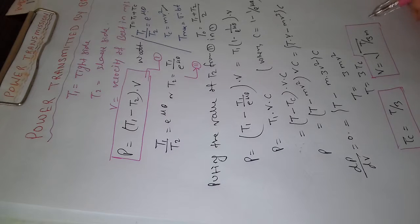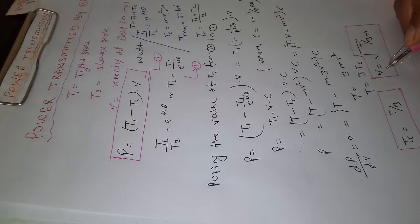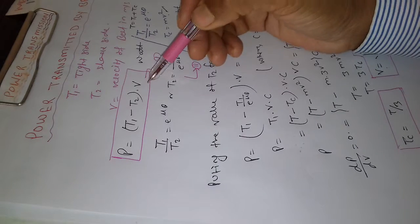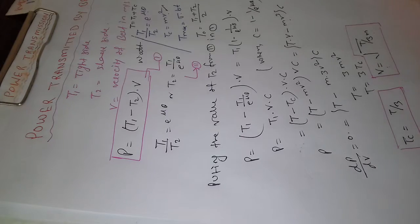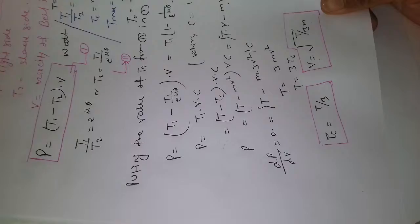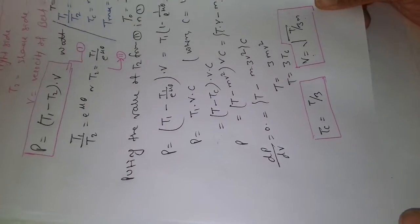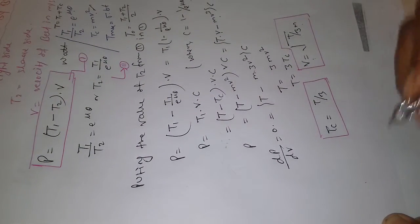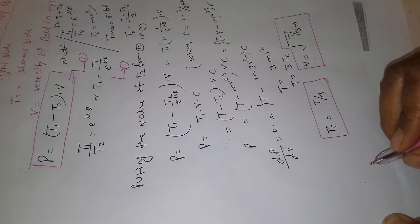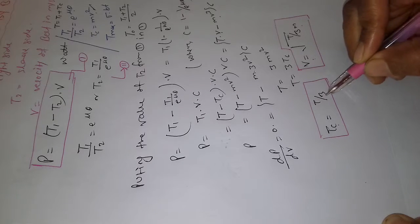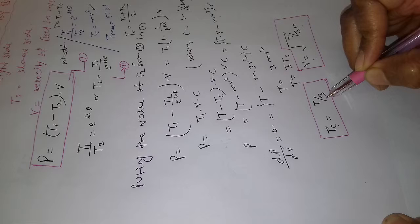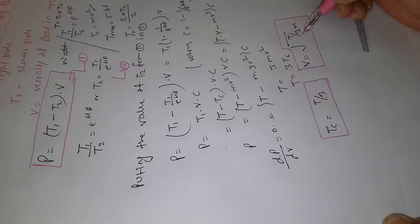So the condition for the velocity at which maximum power can be transmitted is V = √(T/3M). That means maximum power will be transmitted when the centrifugal tension Tc is equal to one-third of the total tension T.